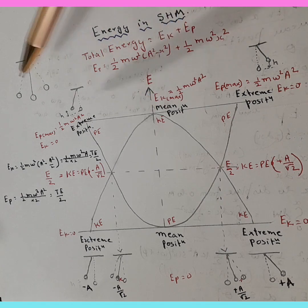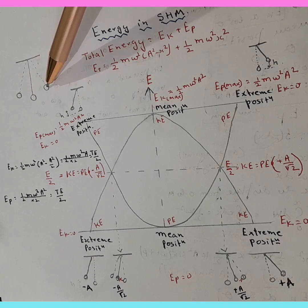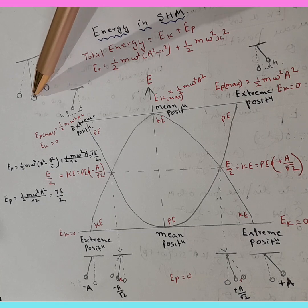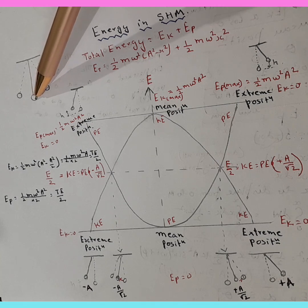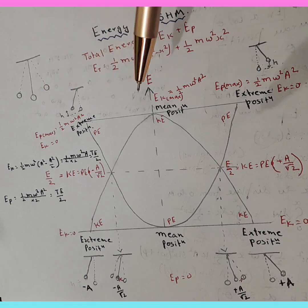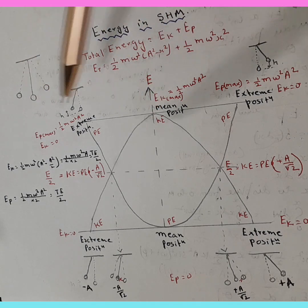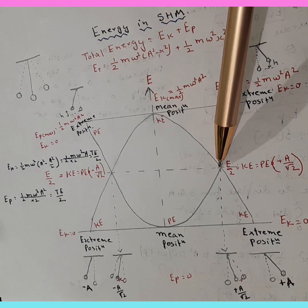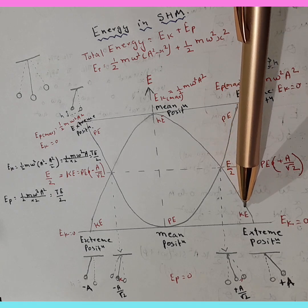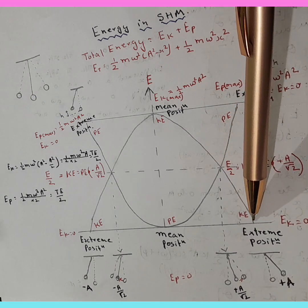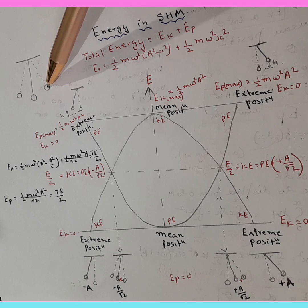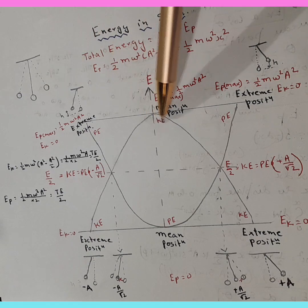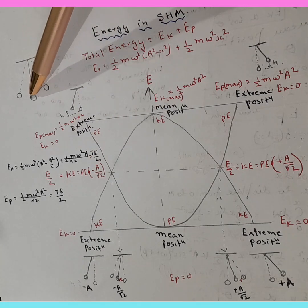When the bob is moving toward the positive direction, kinetic energy keeps on decreasing. Starting from maximum kinetic energy at the mean position, as it moves toward the positive extreme, kinetic energy keeps on decreasing, and at the extreme position the kinetic energy gets to 0. The bob stops there — velocity is 0 — so kinetic energy is 0.